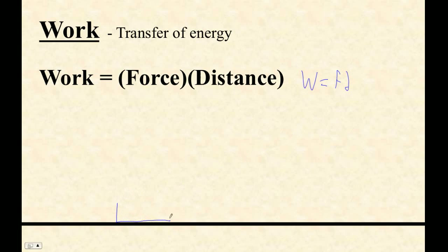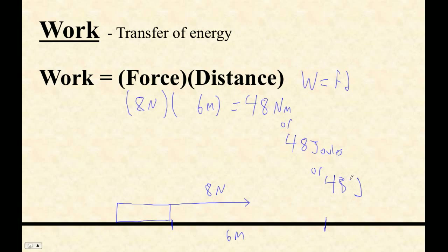This is the simplest example. Let's suppose I exert eight newtons of force and I slide this thing maybe six meters. The force is eight newtons and six meters, and that's 48 newton meters.